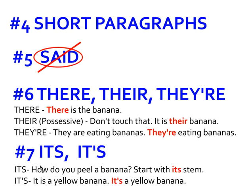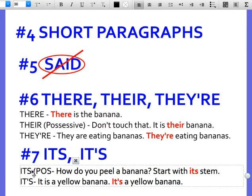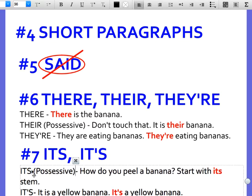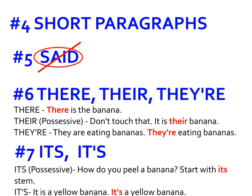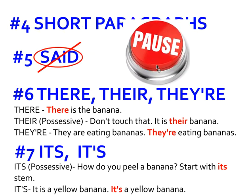Number seven is 'its' and 'it's.' 'Its' (I-T-S) without an apostrophe is possessive — just like 'their,' it shows ownership. For example: 'How do you peel a banana? Start with its stem' — the stem belongs to the banana. 'It's' (I-T apostrophe S) is the contraction for 'it is' — 'It's a yellow banana.' Pause the video now and go back to see if there are any of these errors you can revise in your narrative.